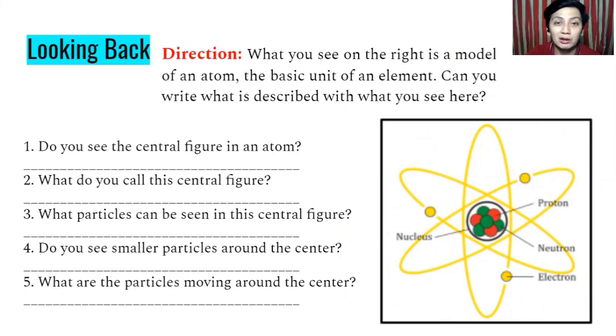So what you see on the right is a model of an Atom, the basic unit of an element. So can you write what is described with what you see here? So all you have to do is to observe this picture here on your right. Look at the illustration here. For example, number one, do you see the central figure in an Atom? Of course, the answer is yes. Or number two, what do you call the central figure? This is known as the nucleus. So I gave you already the answer. So all you have to do is to answer the rest.